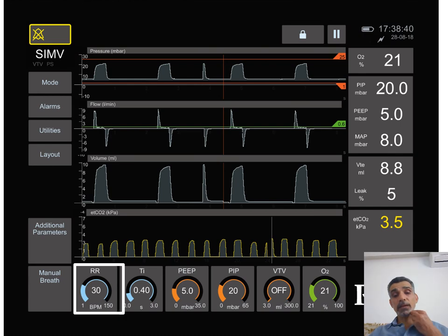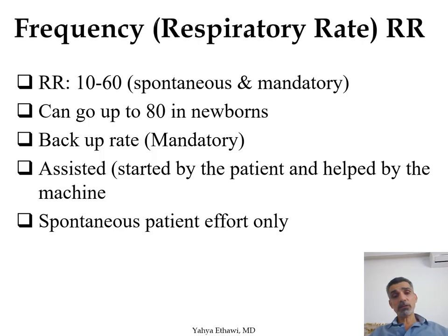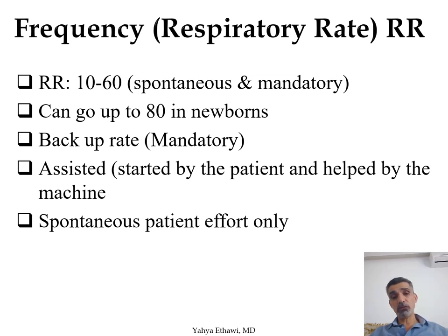The other thing we need to set during ventilation is the respiratory rate, which ranges between 10 to 60. Most babies are in the range of 30 to 60, but sometimes very rarely we go up to 80. The backup rate is the rate set by the ventilator — we tell the ventilator to give that rate to the baby.